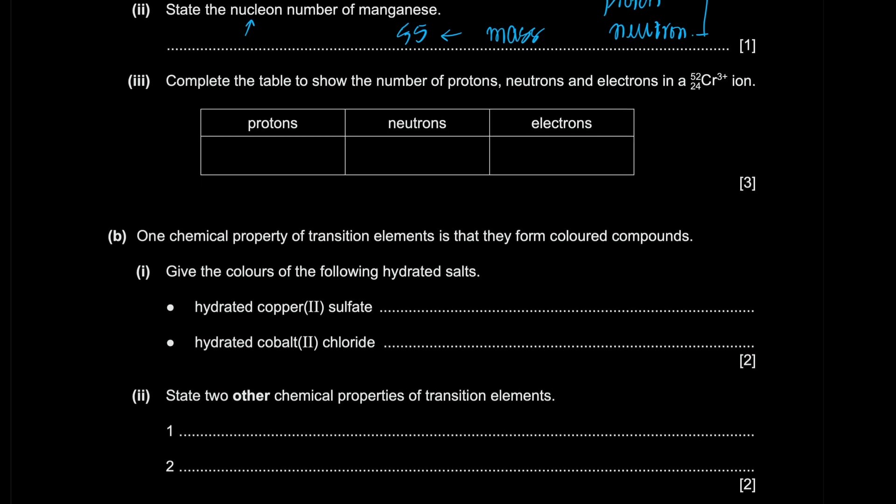Complete the table for protons, neutrons for chromium. Chromium is going to be 24 protons. I say 24, I write 25, nice. Don't do that mistake kids. 28 neutrons, and it has a charge of 3 plus, so that's 3 less of 21 electrons, because it has a positive charge.